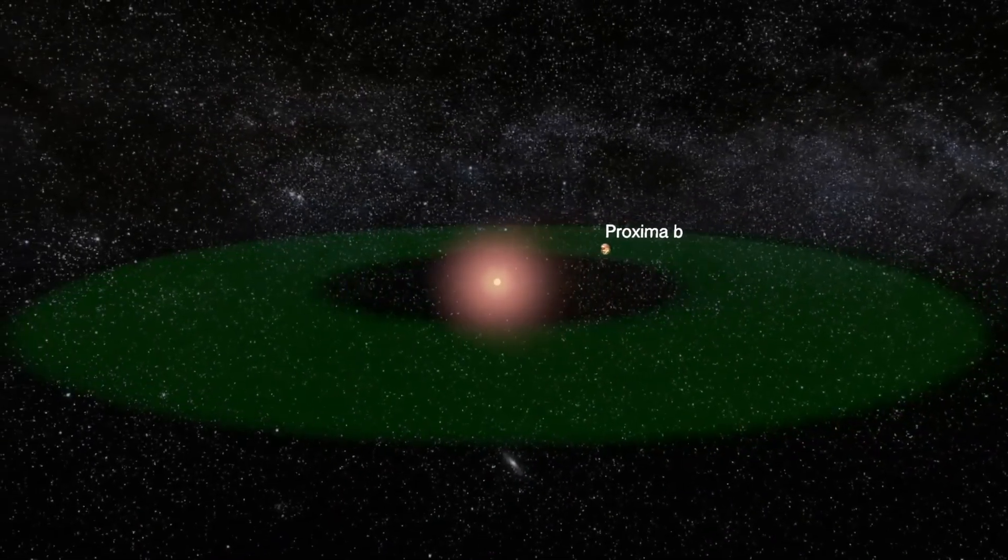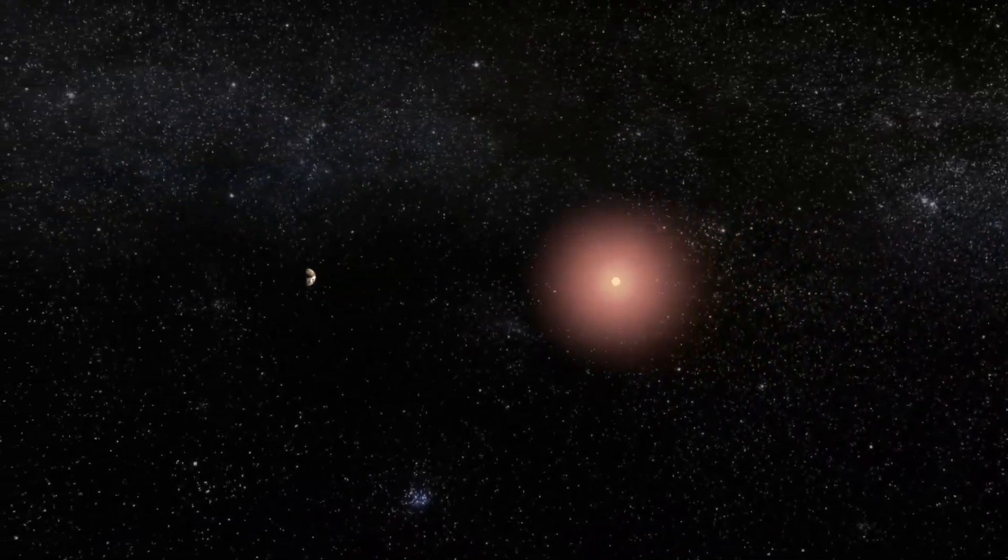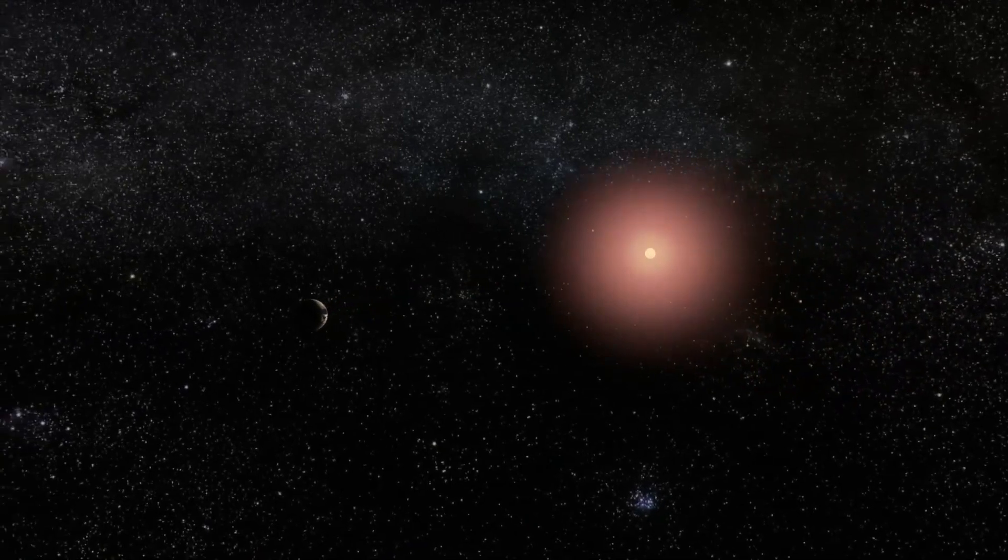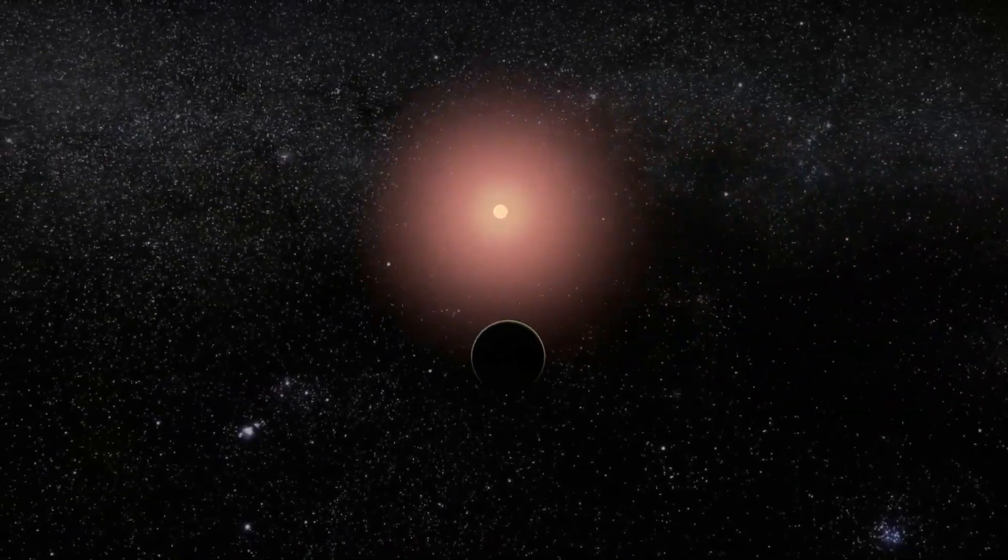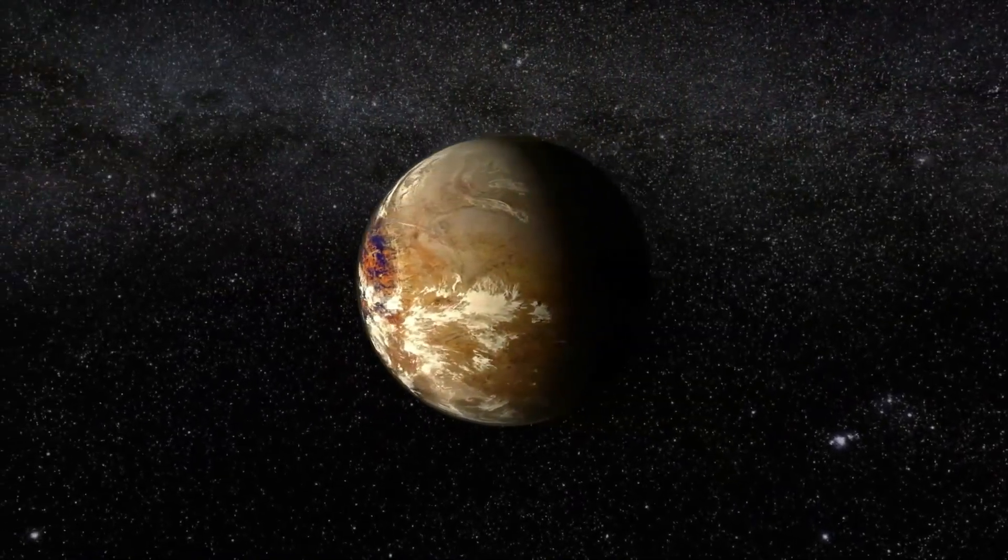Given that the James Webb Space Telescope represents a more advanced technological advance, now in 2024, there is a possibility that it will allow us to expand our research for possible artificial lights on habitable exoplanets such as Proxima b.